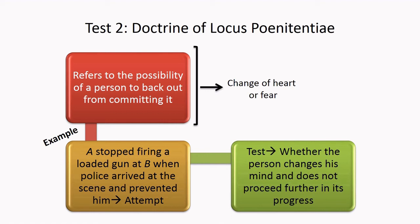Had the facts been different — say, while he was aiming, he reconsidered and felt this was not the right thing to do and desisted from actual firing — then he is still in the preparatory stage. Applying the doctrine of locus poenitentiae, he had backed out of his own accord, meaning he has not yet reached the stage of attempt. At that moment he is still in the stage of preparation and will not be held liable.